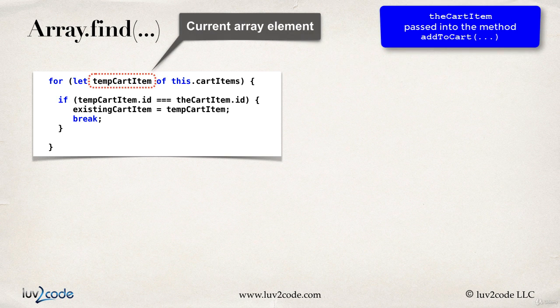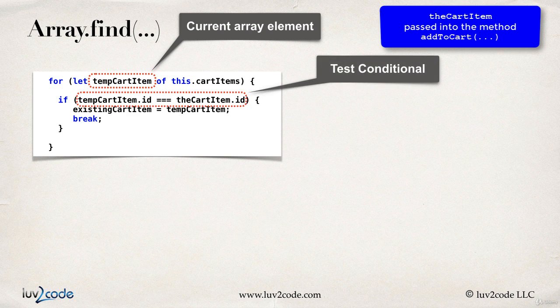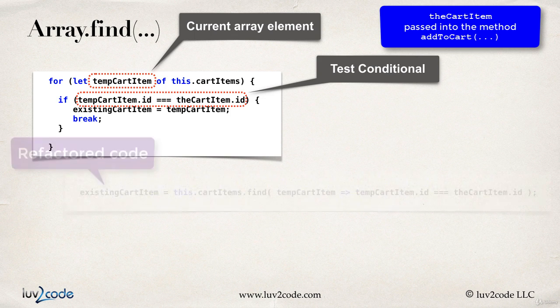Alrighty, so up top we have this for loop and so we have the tempCartItem, that's the current array element as we loop through the array. And then we had a test conditional here. We check to see if tempCartItem.id equals the cartItem.id. So that's kind of like the existing code, the basic code that we had before.